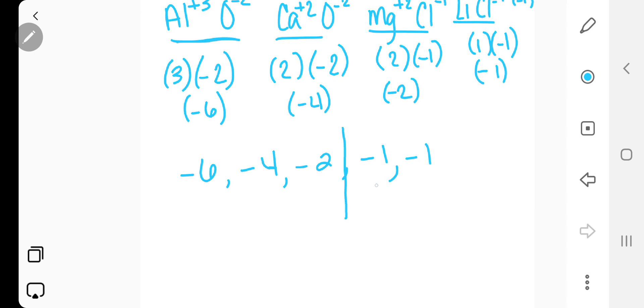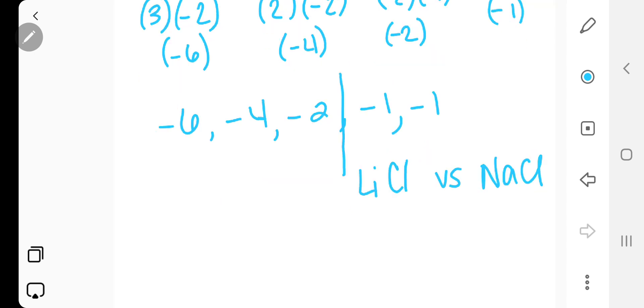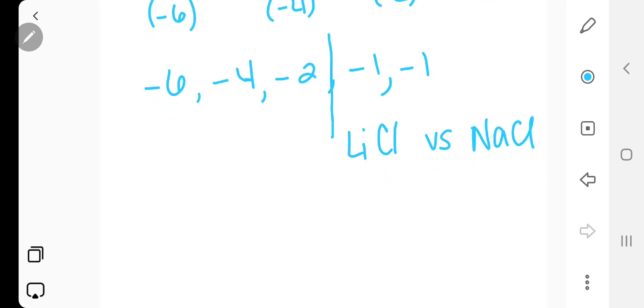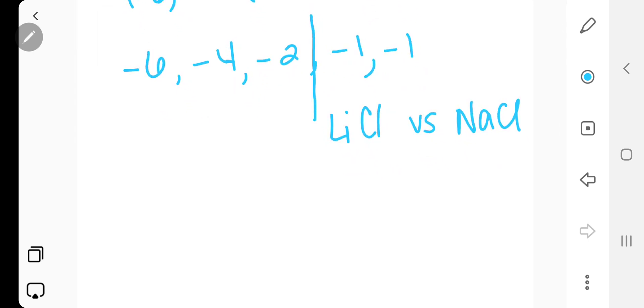Now, what about these guys? This is the next part. So, here we have lithium chloride versus sodium chloride. How do we know which one has the bigger lattice energy? Well, one of the rules about lattice energy is that the smaller the ionic radius, the bigger the lattice energy. So, how do we know which one of these has the smallest ionic radius? Well, you have to look on the periodic table.